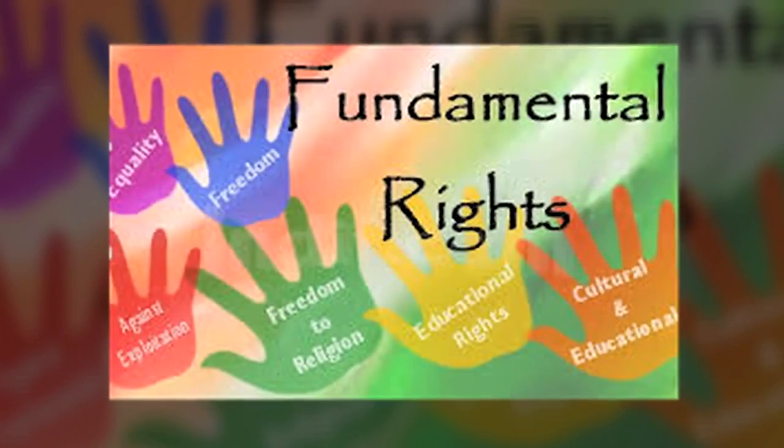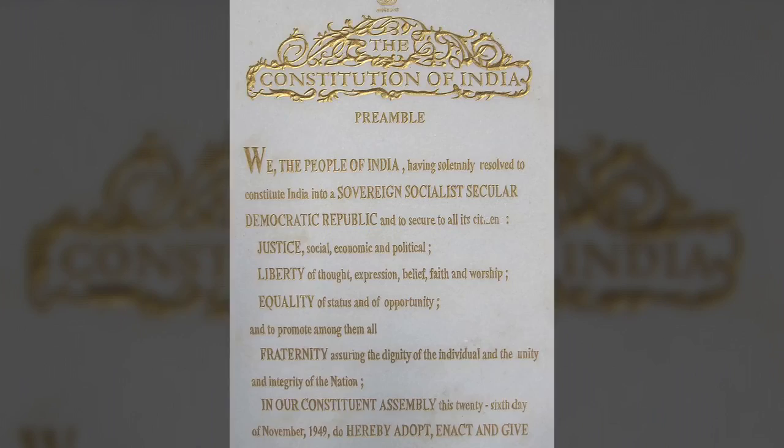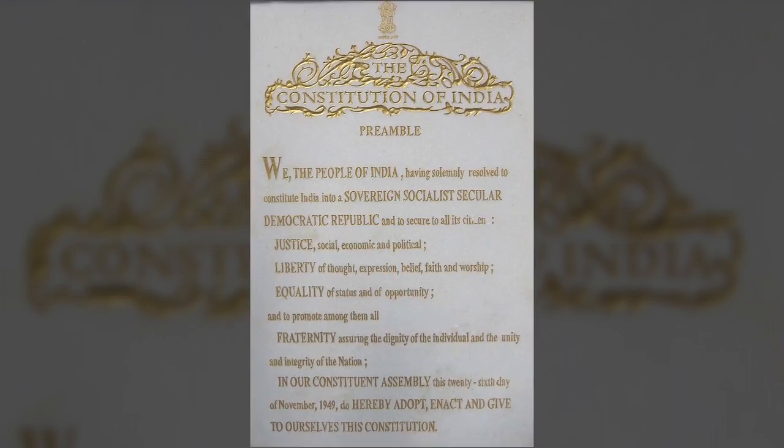Our constitution is a written and lengthy document which defines all aspects of the Indian political system. It has provisions regarding the territories that India will comprise, citizenship, fundamental rights, directive principles, fundamental duties, and the structure and functions of the union, state, and local level. Our constitution has a preamble at the start which describes the fundamental values and the philosophy on which the constitution is based.